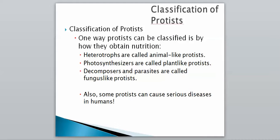And so the way that we classify the protists, they can be classified mainly on how they obtain nutrition, since this is a kind of goofy group with a lot of different types in them. So our first group are going to be heterotrophs, and those are going to be called our animal-like protists. And then ones that can photosynthesize are called plant-like protists. And then there are decomposers, and there's actually some parasitic protists, which are going to be called our fungus-like protists.